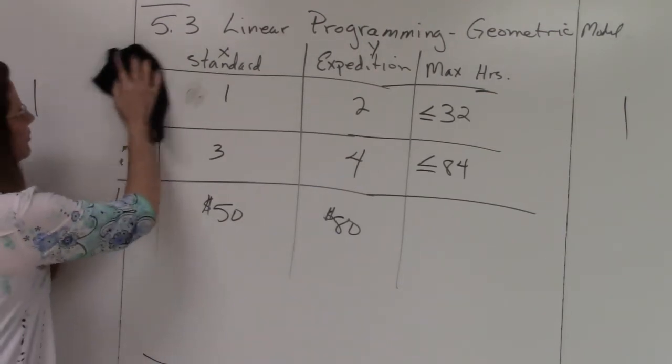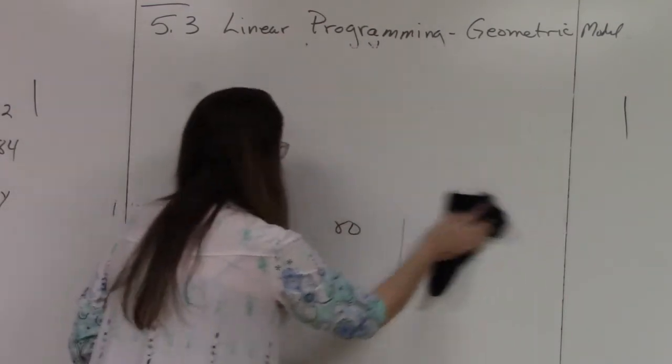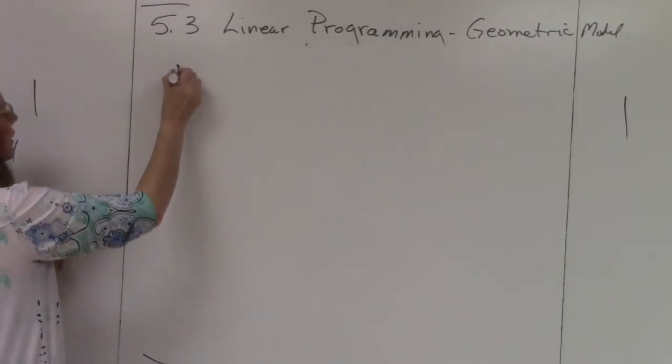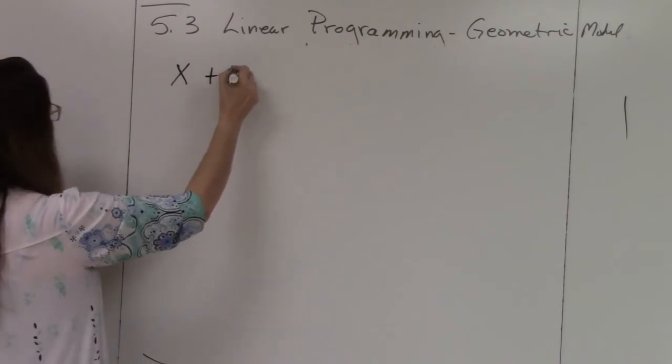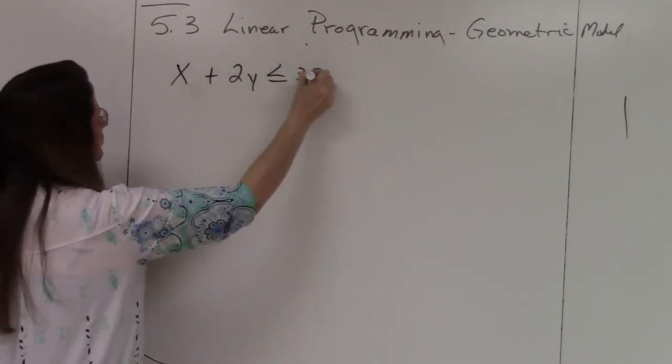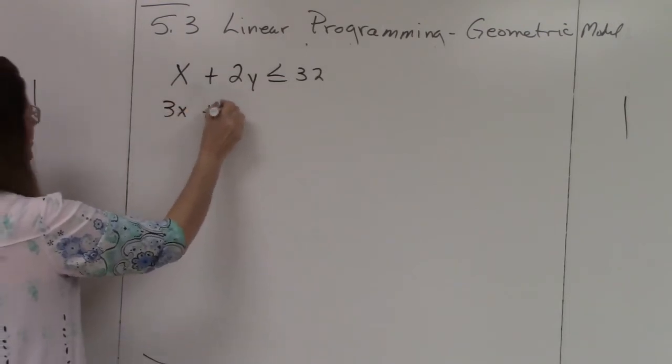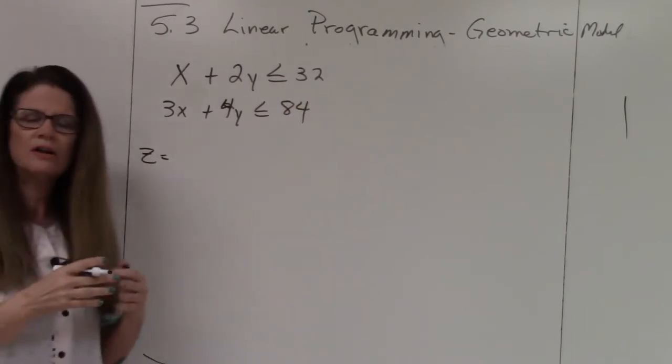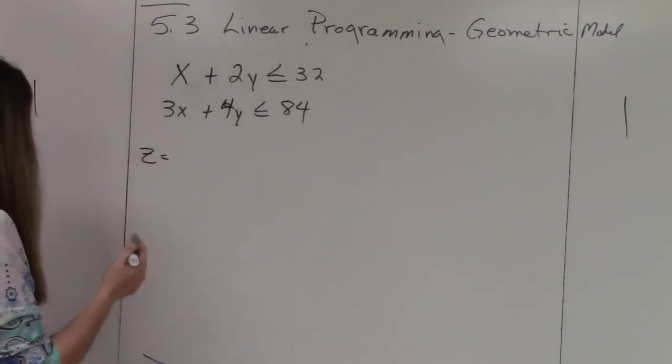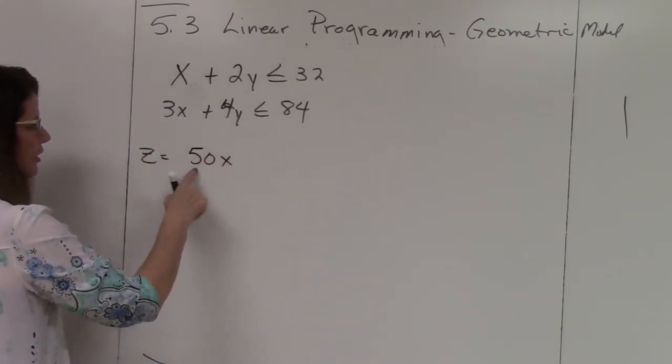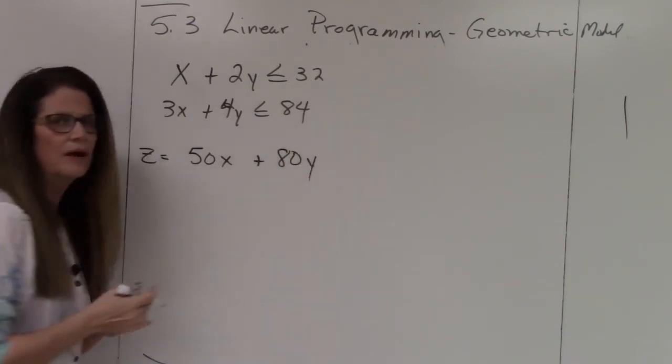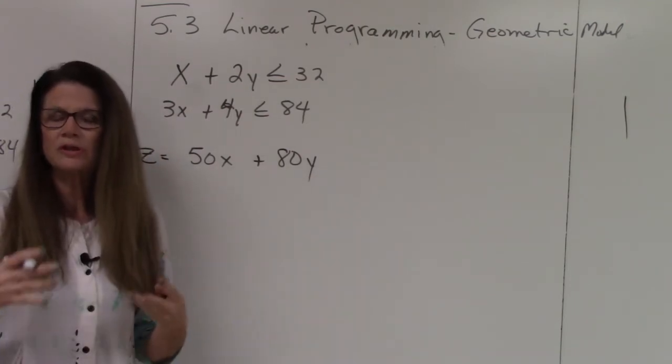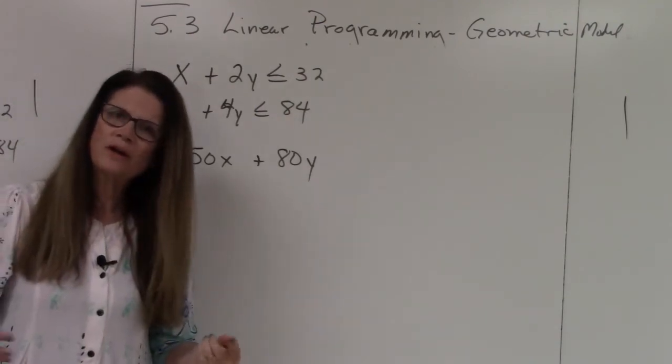Okay, so now I'm going to erase this so I have more room. Here are our inequalities: we have X plus 2Y is less than or equal to 32, we have 3X plus 4Y is less than or equal to 84. The objective function we usually call Z, so I have 50 dollars for every standard and 80 dollars for every expedition. The question is how many of each do I need to produce to make my maximum profit.